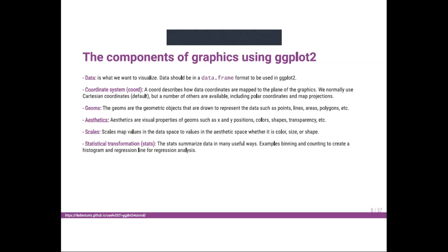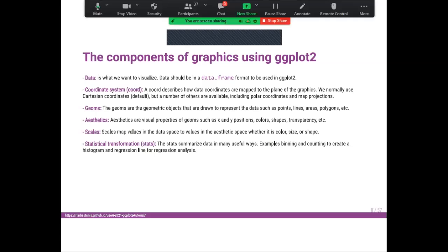We also have geoms — the geometric objects drawn to represent the data, like points, lines, areas, polygons, etc. And we have aesthetics (aes), which are the properties of geoms such as x and y position, colors, shapes, transparency, etc.